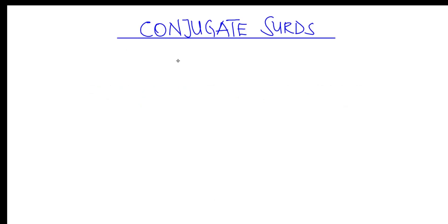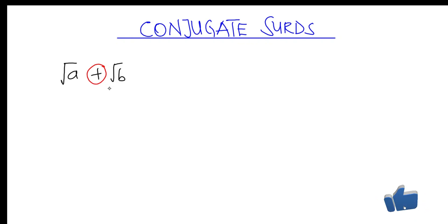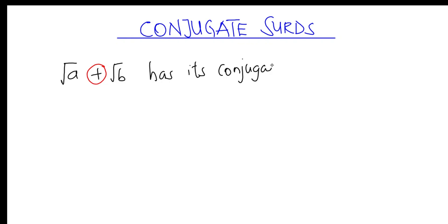First, let's look at the meaning of conjugate surds. When we talk about a conjugate surd, our main focus is to change the sign between two terms of a binomial surd. So when we talk about a binomial surd, we can think about the square root of a plus square root of b. To find its conjugate, we change the sign in between to its opposite sign — so the opposite of plus is minus. Therefore, the conjugate of √a + √b is √a − √b.